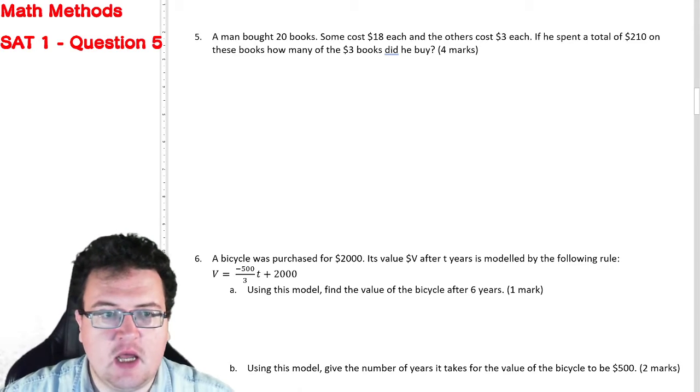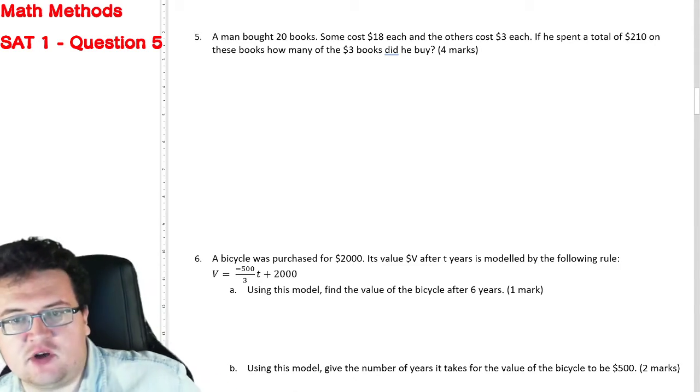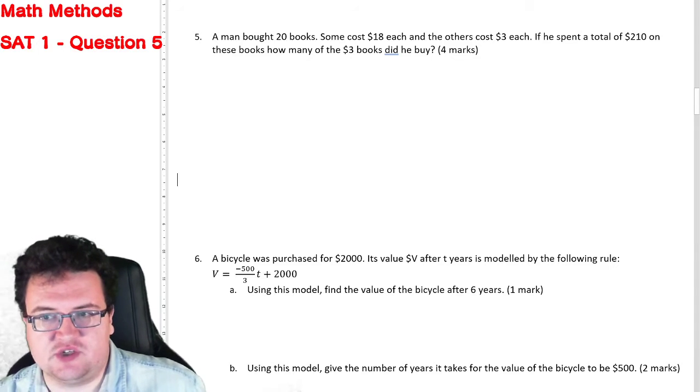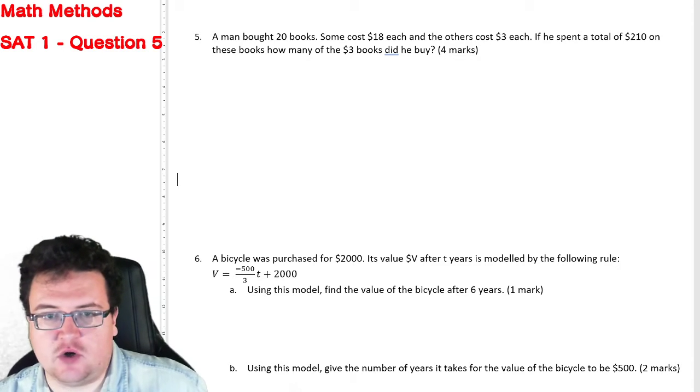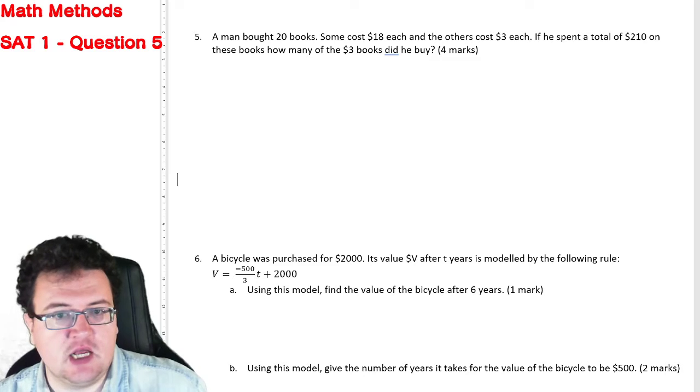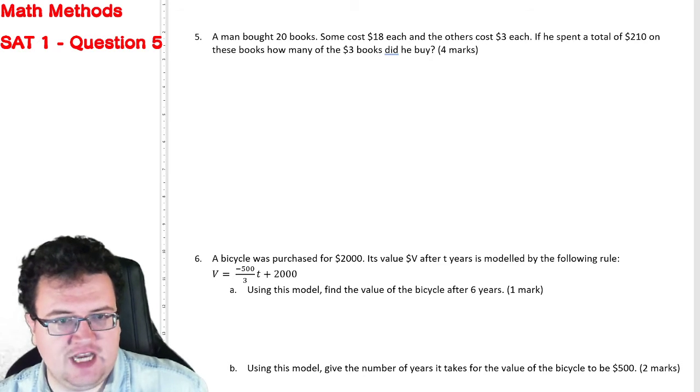Looking at question five next. A man bought 20 books, some cost $18, the others cost $3. If he spent a total of $210 on these books, how many of the $3 books did he buy?